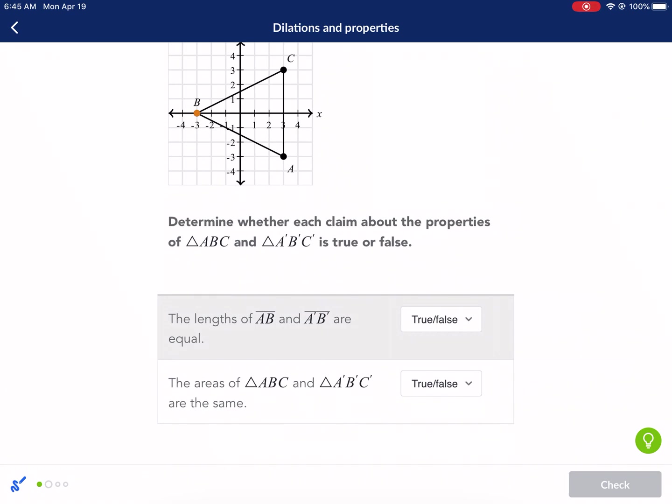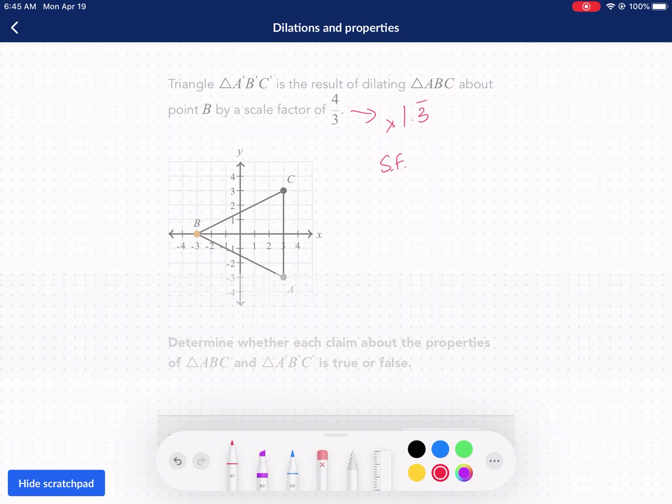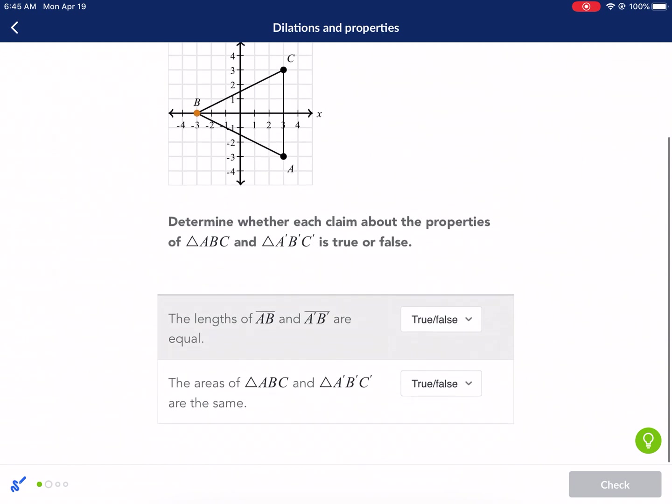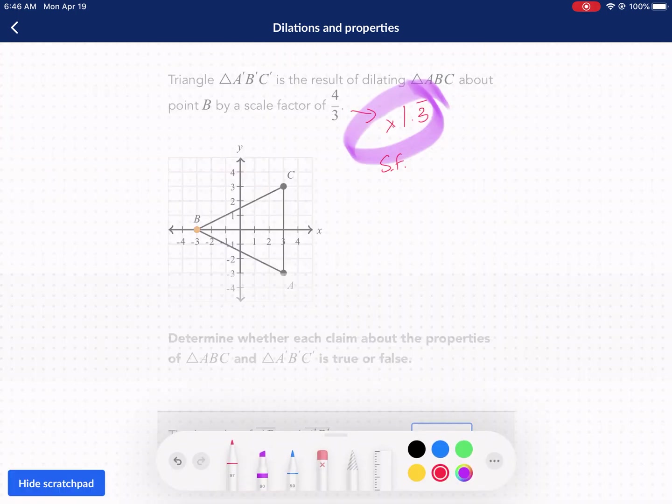Determine whether each claim is true or false. The lengths of AB and AB prime are equal. Well, if we're dilating this about a scale factor, that means it's going to get bigger. That's the definition of a dilation, so this is clearly false.